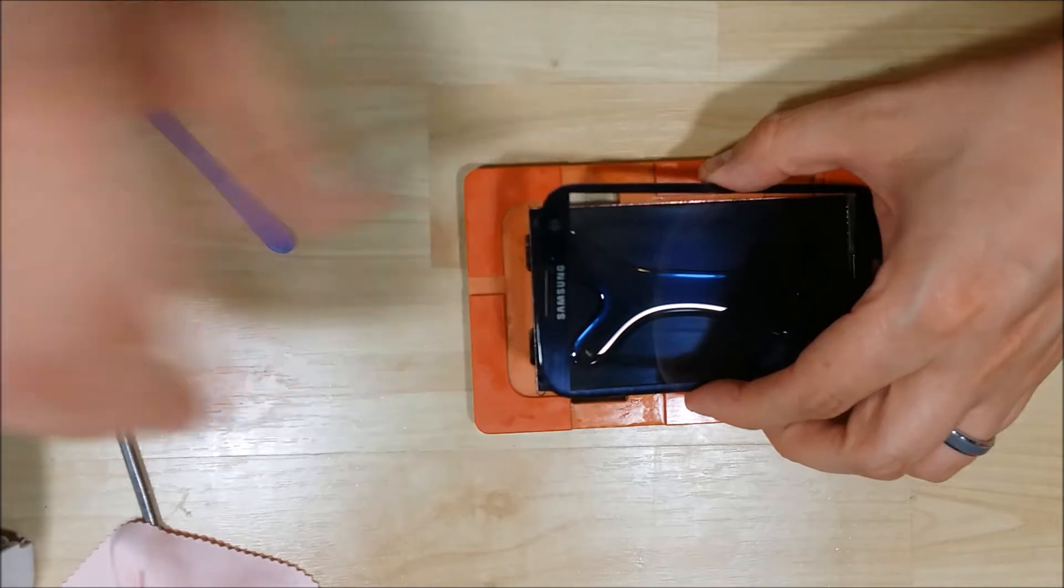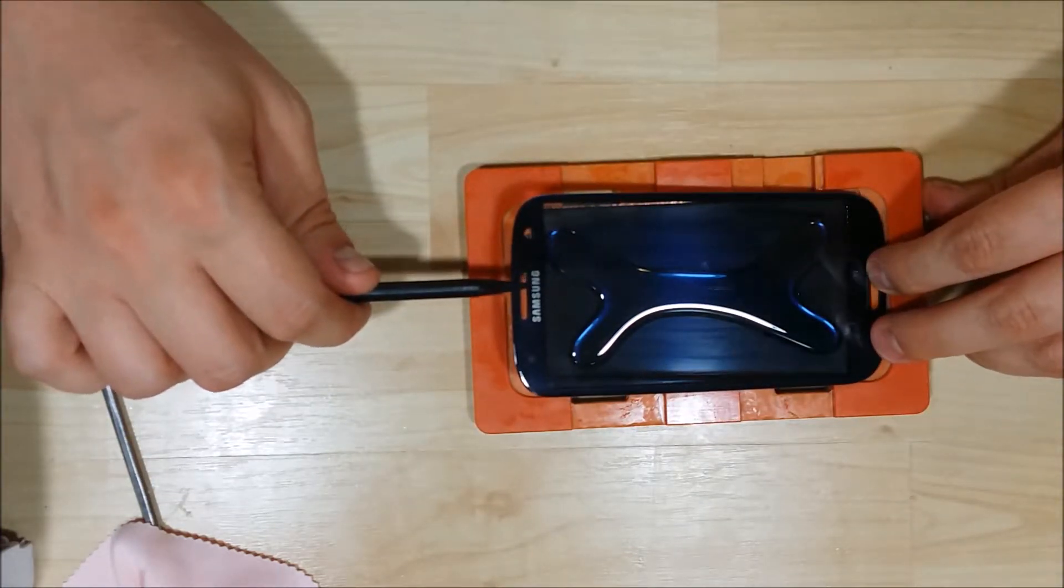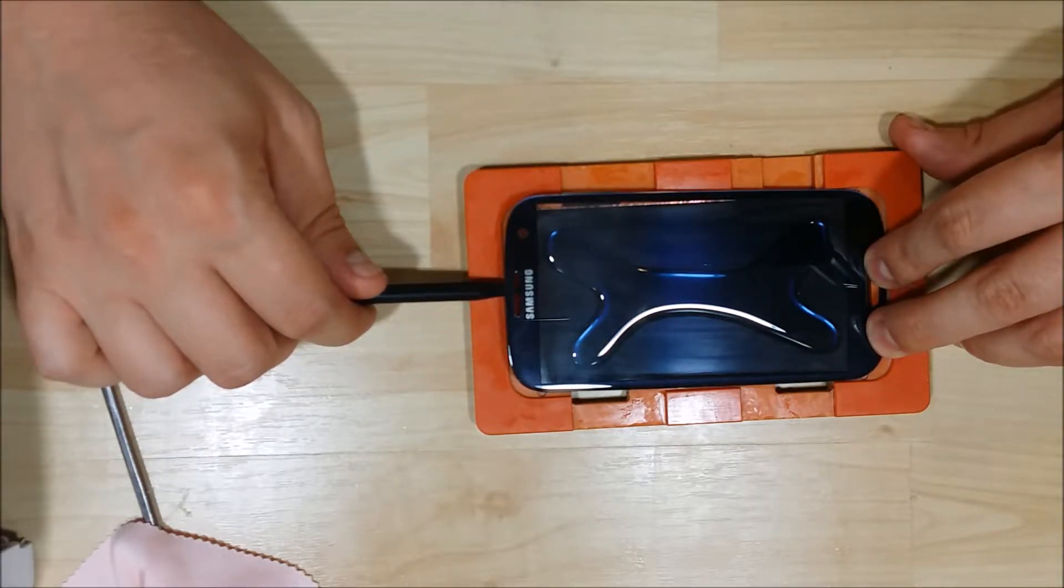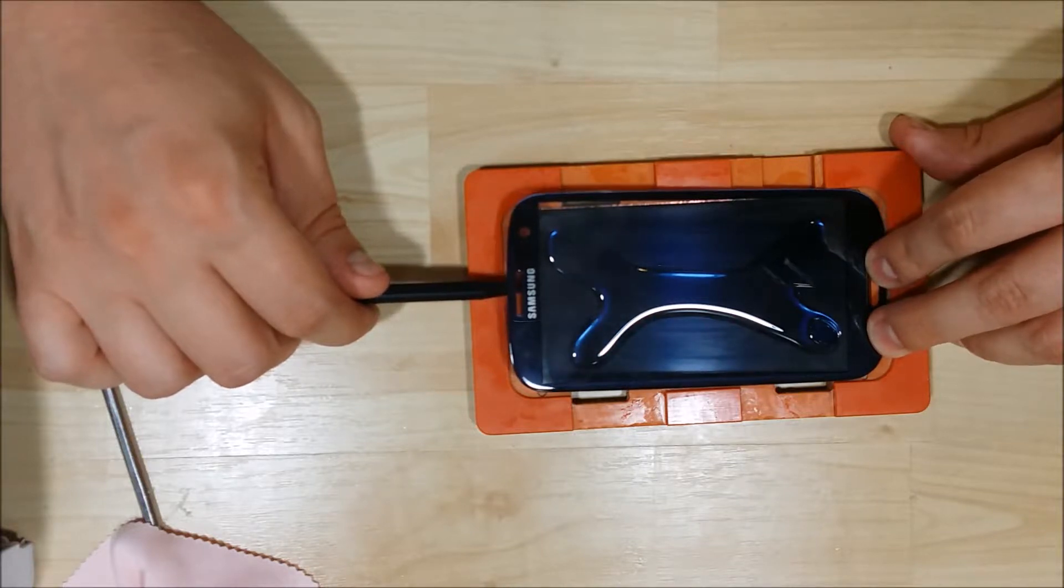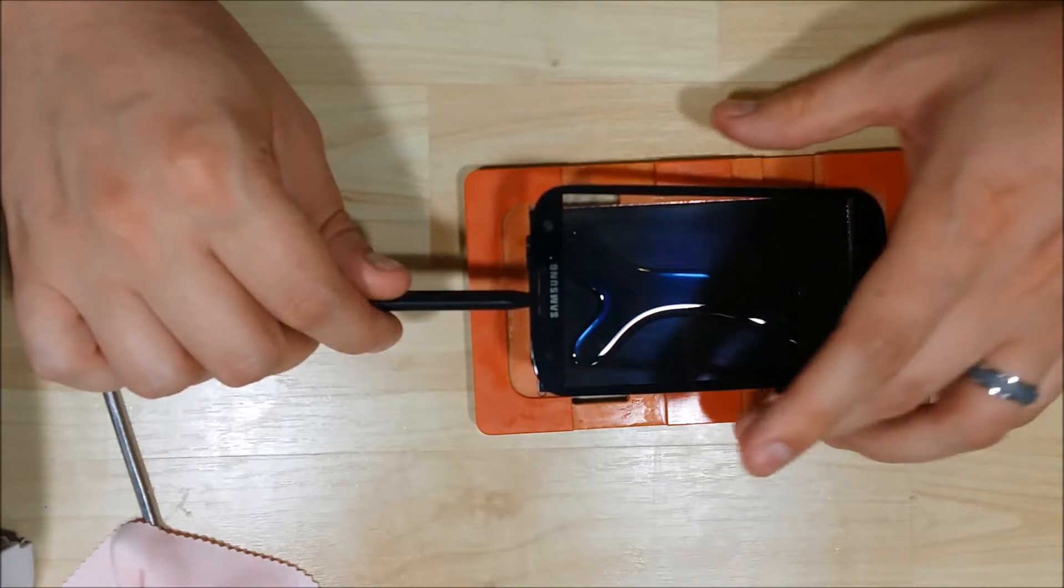Alright, make sure you put this down the correct direction. The LCD cable needs to go on the right side of the screen. We're just going to gently lie this down. Let the glue hit the bottom portion of the glass. Take it nice and slow.